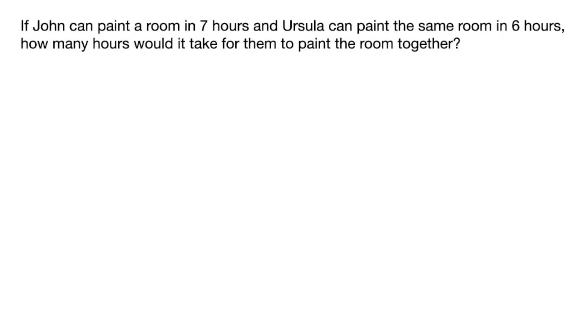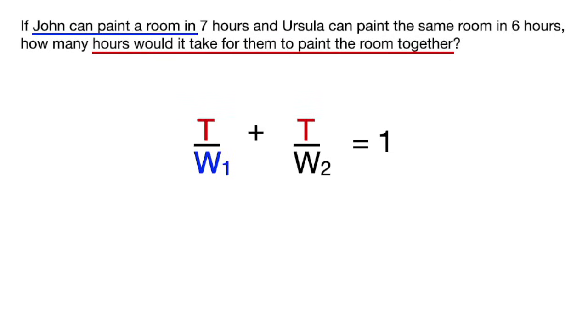I'm going to skip that work timetable and just give you this easy formula to use every time. Where both t's on the top are equal to the time spent together, w1 is equal to the time spent by one person or one thing, and w2 is equal to the time spent by the other person or other thing. And it'll always be equal to one if one job is being done.